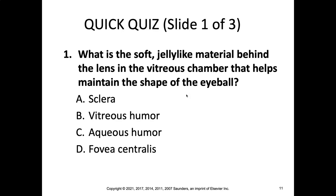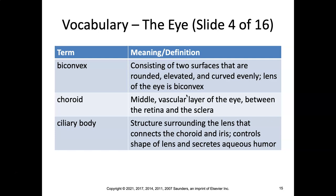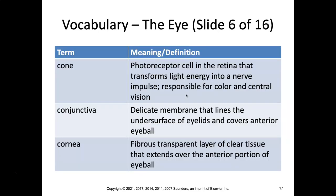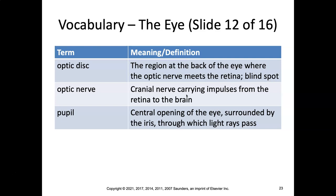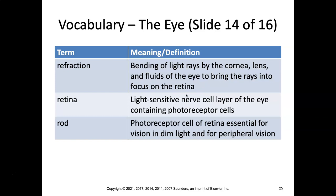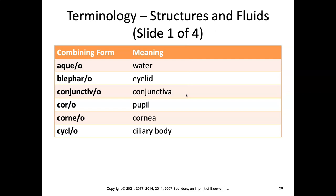Pop quiz: What is the soft jelly-like material behind the lens in the vitreous chamber that helps maintain the shape of the eyeball? We just covered this. Vocabulary terms you need to know include: accommodation, anterior chamber, aqueous humor, biconvex, choroid, ciliary body, cone, conjunctiva, cornea, fovea centralis, fundus of the eye, iris, lens, macula, optic chiasm, optic nerve, optic disc, pupil, refraction, retina, rod, sclera, thalamus, and vitreous humor. Study up for your quiz.